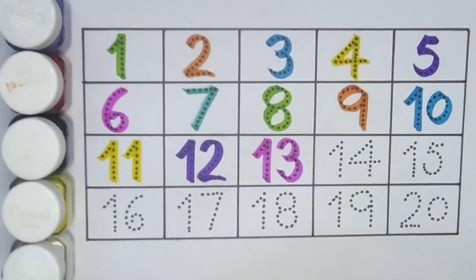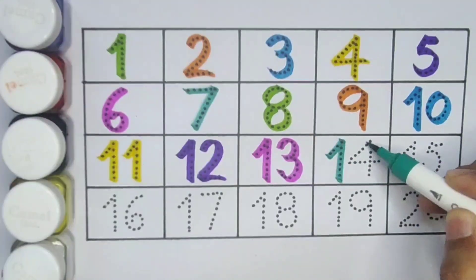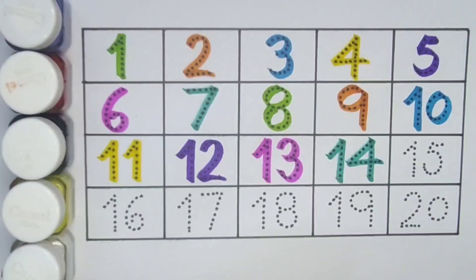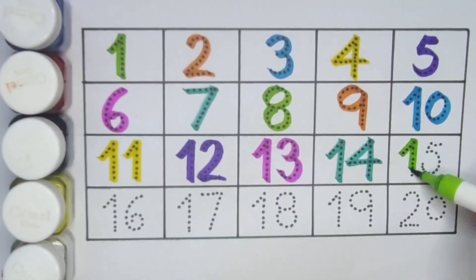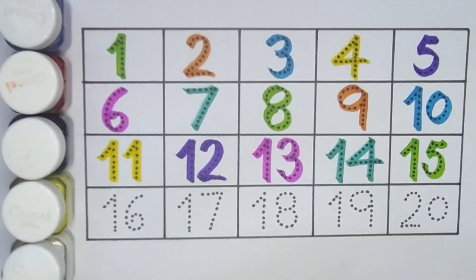Next kids, fourteen, one four, fourteen, number fourteen. Next kids, fifteen, one five, fifteen, number fifteen.